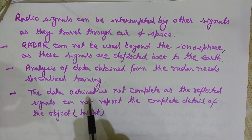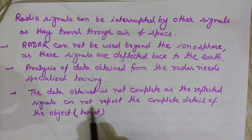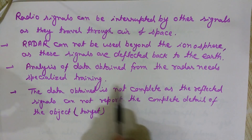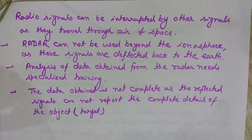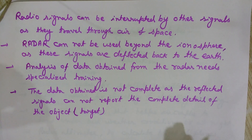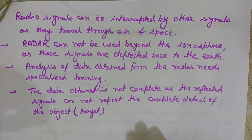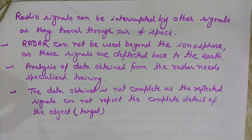The data obtained is not complete, as the reflected signal cannot report the complete details of the object. The echo signal has its own limitations, so complete details about the target cannot be obtained. For example, color cannot be determined, and only the outer surface can be analyzed. Various details remain inaccessible, which is a significant limitation of using radar.